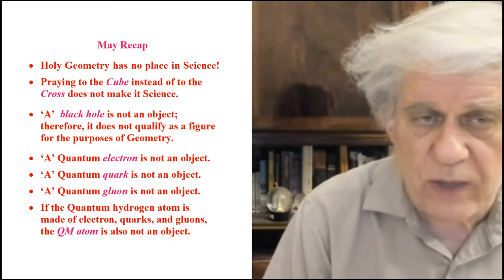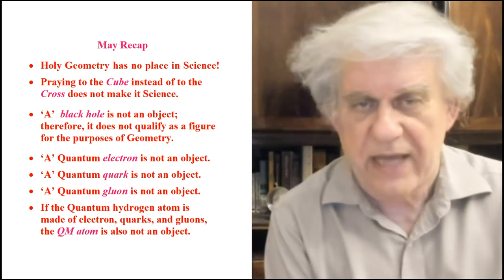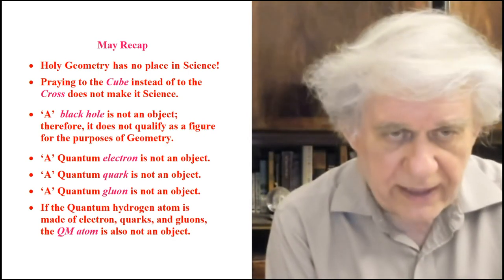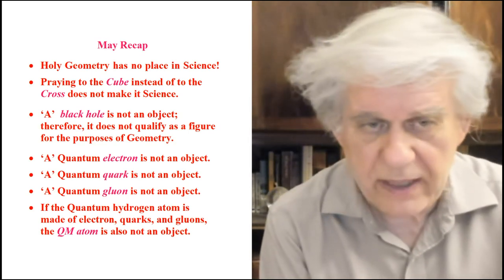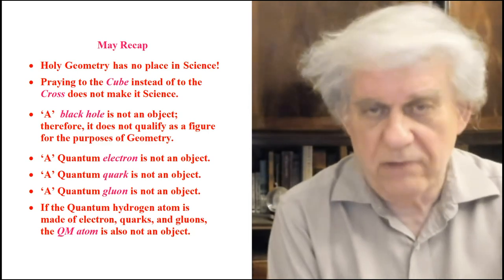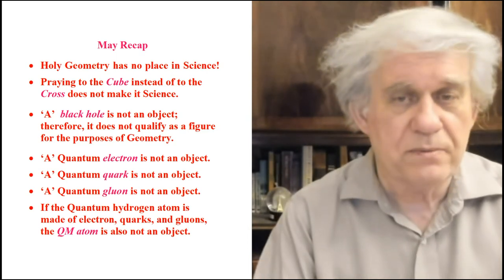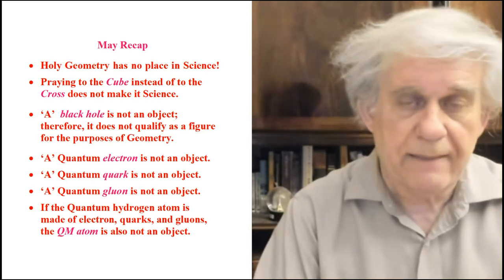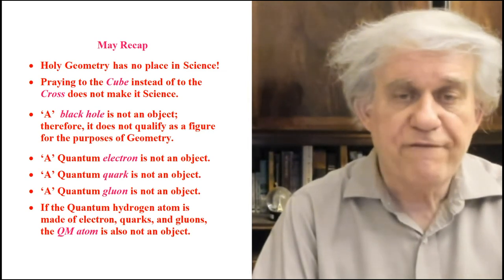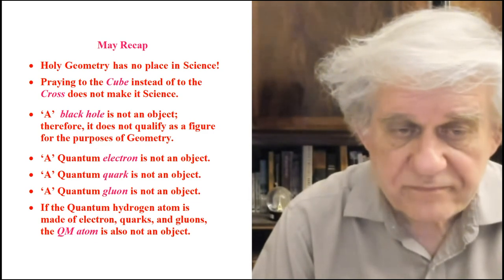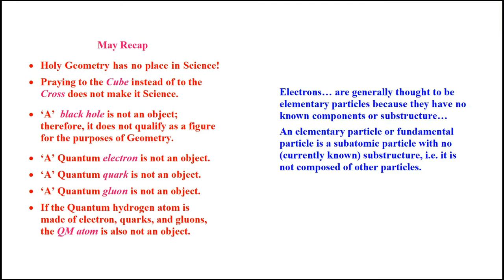And so let's continue here. The other issue is quantum electron is not an object. A quantum quark is not an object. A quantum gluon is not an object. If the quantum hydrogen atom is made of electrons, quarks and gluons, quarks and gluons making the proton and the neutron, then the quantum mechanics atom is not an object, is not a figure, is not a part of geometry. But they use the word point. They talk about the electron being a point particle, an elementary particle, a fundamental particle. Here it is. This is the definition that you find out there.